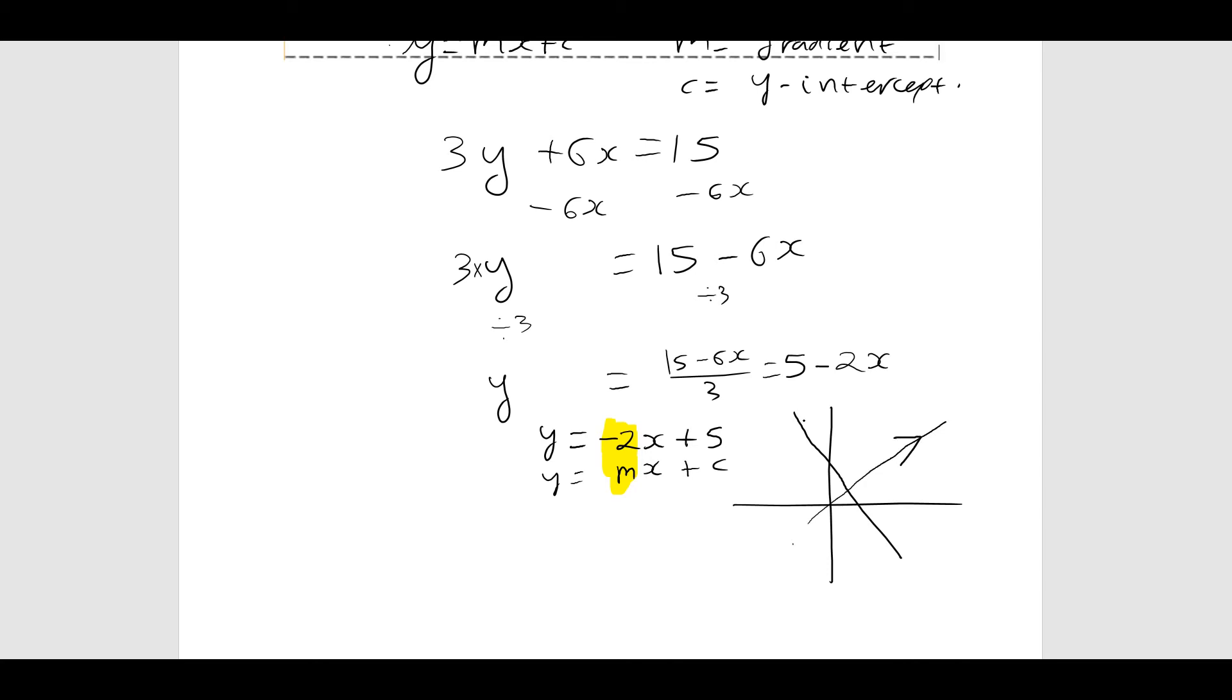So we need to remember that if I have two lines with gradients mA and mB, the product of their gradients is minus 1.